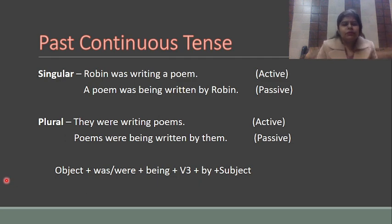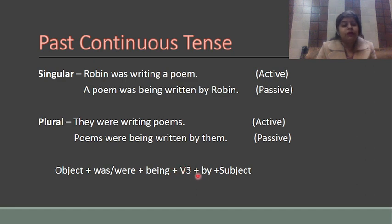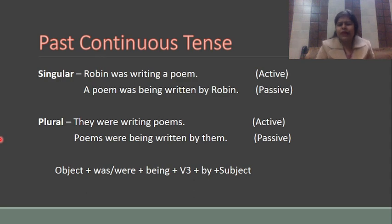Always remember: we add 'was' or 'were' according to the object in past continuous tense. Structure: Object + was/were + being + verb third form + by + subject. Third form and 'by' are very prominent in every passive form. I hope there is no confusion — let's move to the next slide.